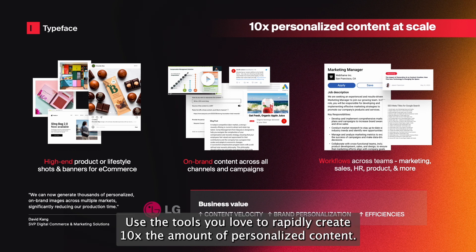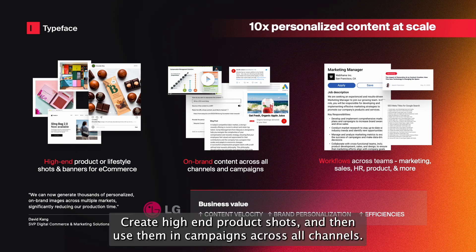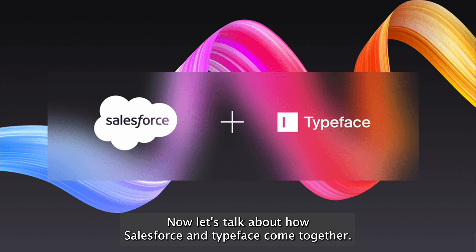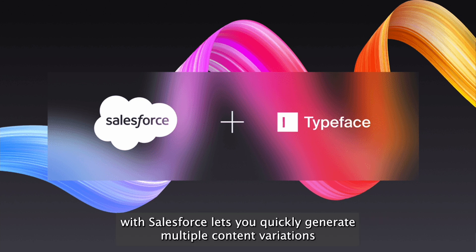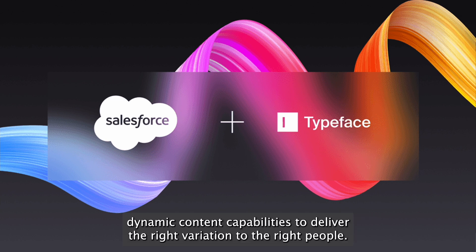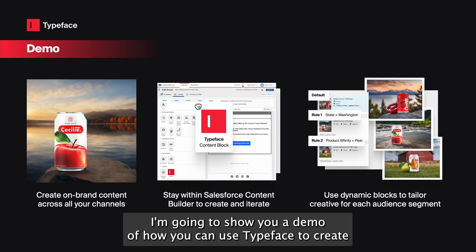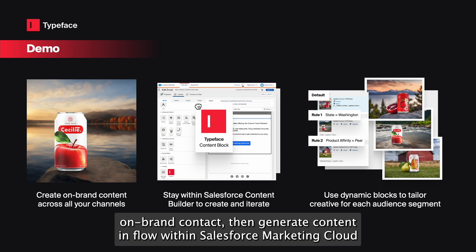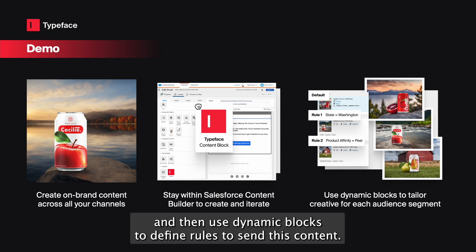So what can you do with Typeface? Use the tools you love to rapidly create 10x the amount of brand-personalized content, create high-end product shots, and then use them in campaigns across all channels. Now let's talk about how Salesforce and Typeface come together. What we're announcing today with Salesforce lets you quickly generate multiple content variations for all your audience segments, and then combine that with Salesforce's dynamic content capabilities to deliver the right variation to the right people. Let's take a look at what V1 looks like. I'm going to show you a demo of how you can use Typeface to create on-brand content, then generate content in flow within Salesforce Marketing Cloud, and then use dynamic blocks to define rules to send this content.